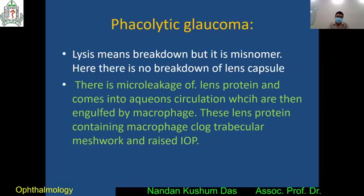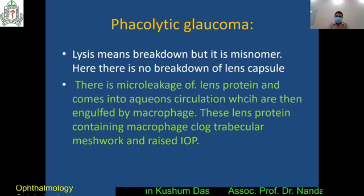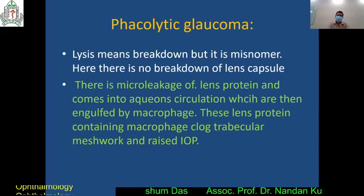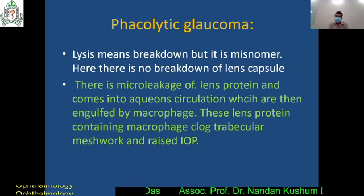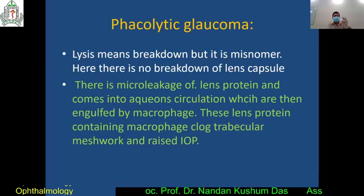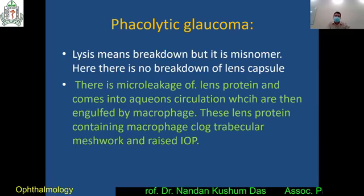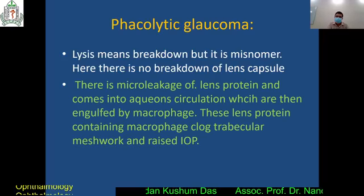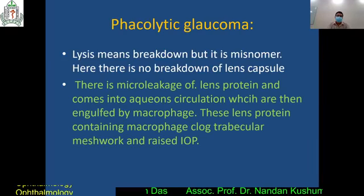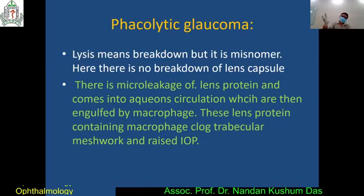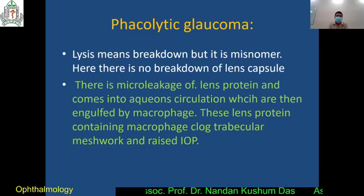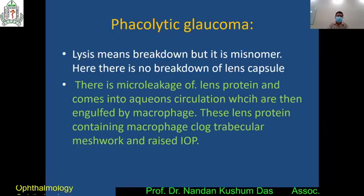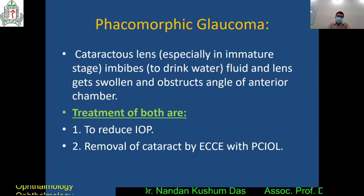The mechanism of phacolytic glaucoma: there is microleakage of lens protein from the cataractous lens into the aqueous circulation. These are then engulfed by macrophages. The lens-protein-containing macrophages clog the trabecular meshwork — clog means occlude. You know the trabecular meshwork is the drainage port, so indirectly aqueous humor drainage is disturbed, ultimately raising intraocular pressure.